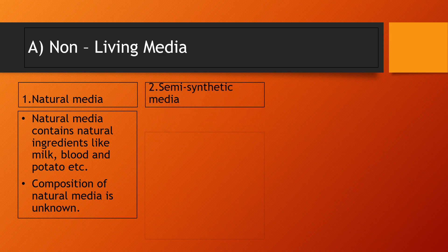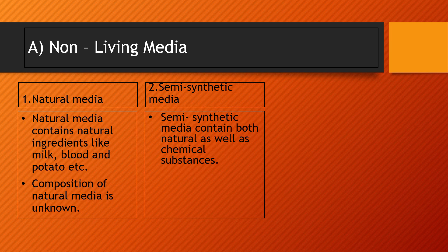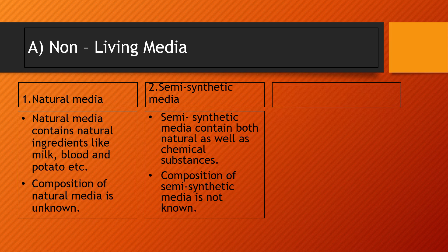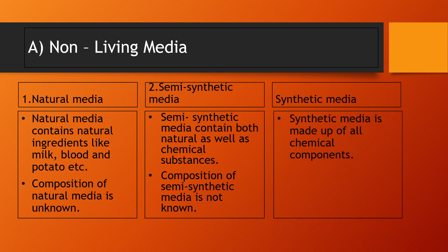The second is semi-synthetic media. Semi-synthetic media contains both natural as well as chemical substances, and here also the composition is not known to us. The third one is synthetic media, which is basically made up of all chemical components, meaning the exact composition of the media is known to us — all the ingredients used have a known exact composition.